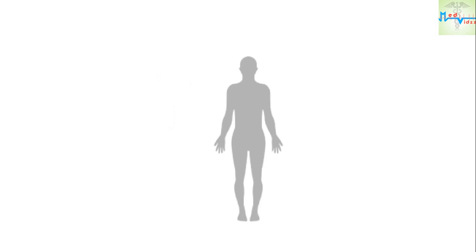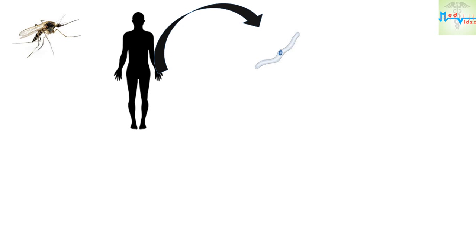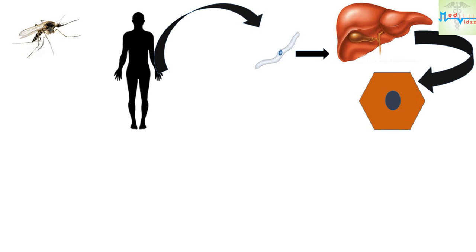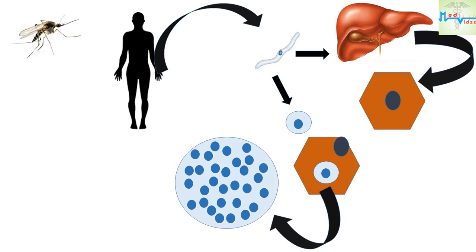The mosquito contains sporozoites. When the mosquito bites a human being, it injects the sporozoites into the body. The sporozoite initially reaches the liver and starts infecting the hepatocytes. By the time it infects the hepatocytes, it changes its shape from spindle to rounded. It infects the hepatocytes and pushes the nucleus of the hepatocyte to one corner, after which the nucleus of the sporozoite multiplies, and all these nuclei develop cytoplasm around them.